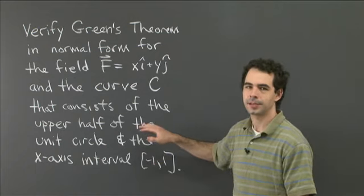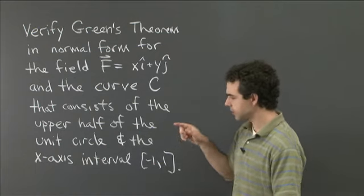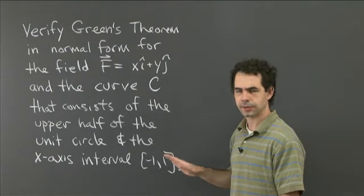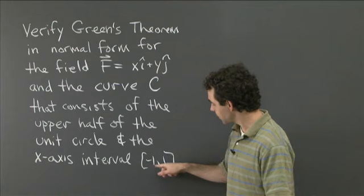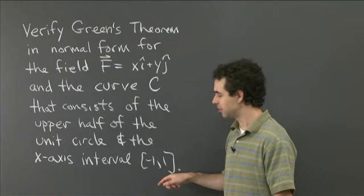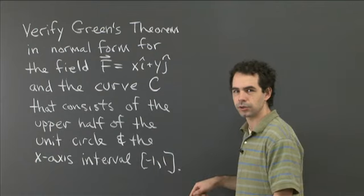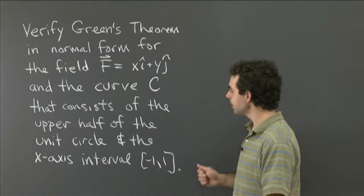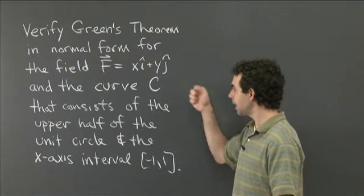Let me clarify what I mean by this curve C. It's the usual unit circle — circle of radius 1 centered at the origin — just its top half. And the x-axis interval minus 1 to 1 means the line segment connecting the points (−1, 0) and (1, 0), so the diameter of that semicircle. That's the curve C and the field F.